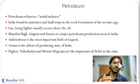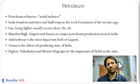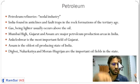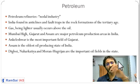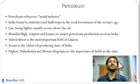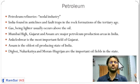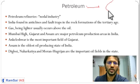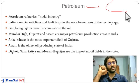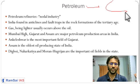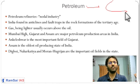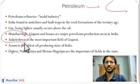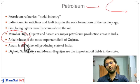Petroleum regions in India include Bombay High, where the ocean is currently present; Barmer and Jaisalmer in Rajasthan, where an ancient ocean was present; and Assam, where an ancient ocean was also present. Petroleum is one of India's core and nodal industries, as many other industries depend on it. Petroleum and natural gas are found together. Key regions include Assam, Mumbai High, Barmer, Jaisalmer, and Ankleshwar in Gujarat.